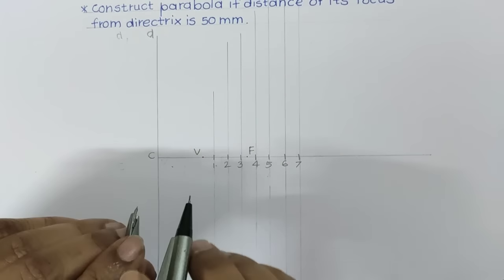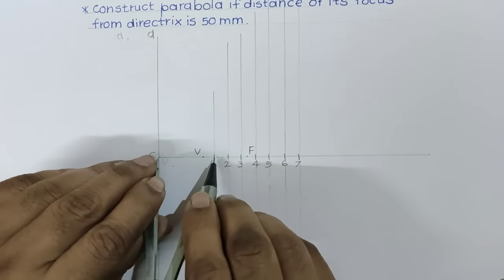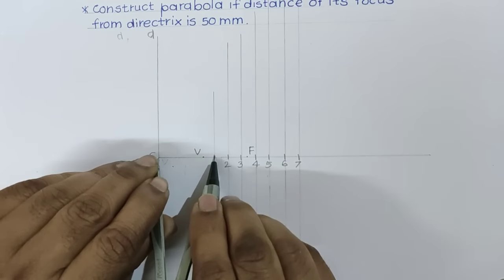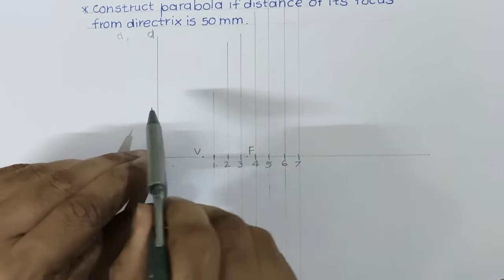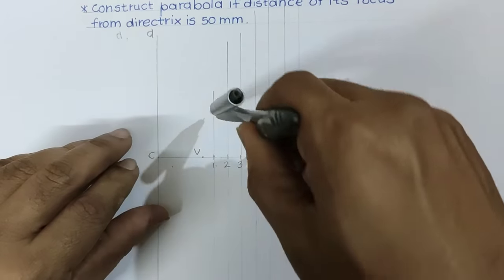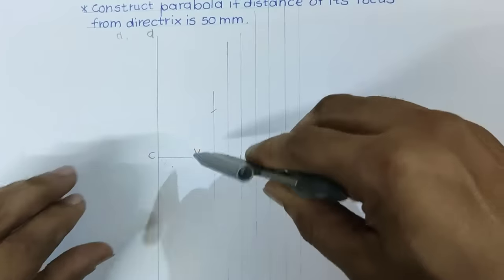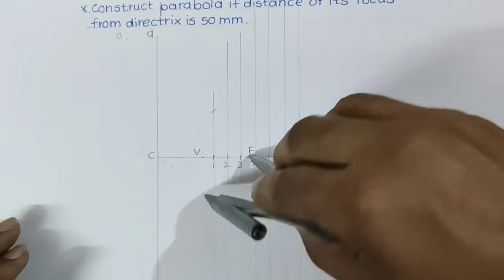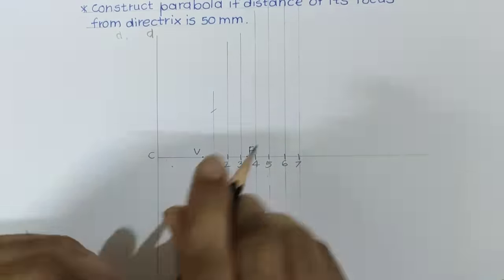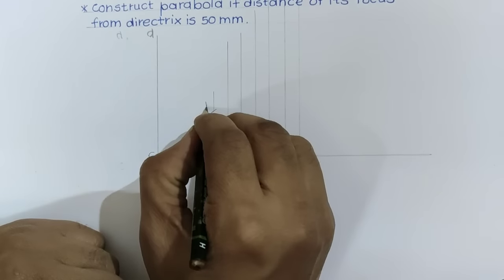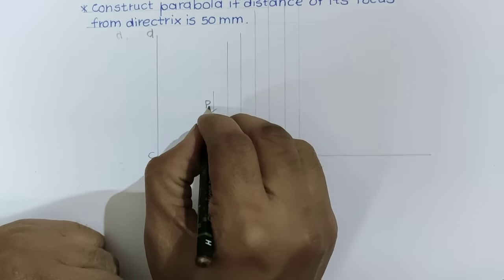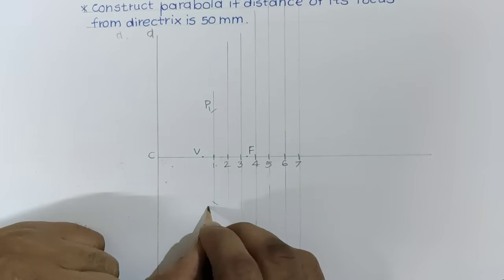Then, take distance equal to C1 in compass, and taking F as a center, cut first line on both sides. These two points will be on parabola. Call this point as P1 and this will be P1 dash.